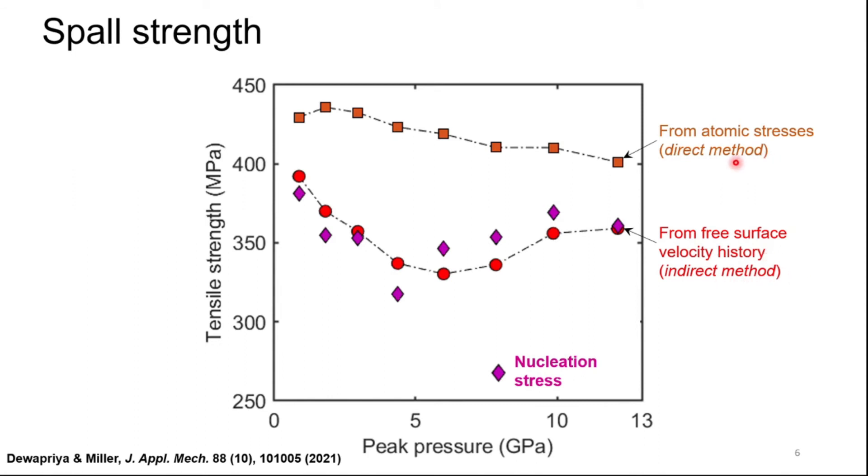The second is a direct method, which uses the atomic stresses in the spall region. The spall strength computed from the direct method is consistently higher than the strength obtained from the indirect method. Moreover, the strength computed from the direct method shows a noticeable agreement with the fracture nucleation strength.